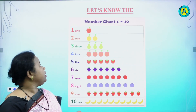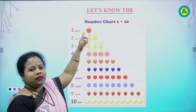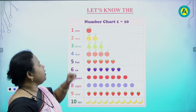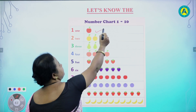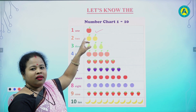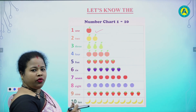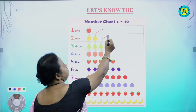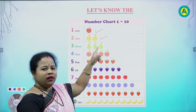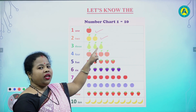Now, students, count the numbers. How many apples are there? Count. Yes, 1. In the second picture, how many fruits are there? Count. 1, 2. Good. In the third line, how many fruits are there? Count. 1, 2, 3, 4. Very good.